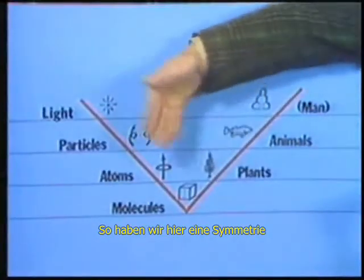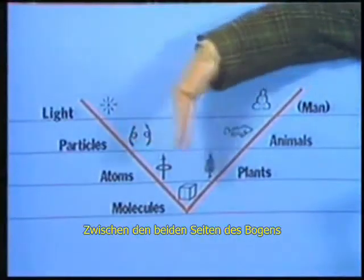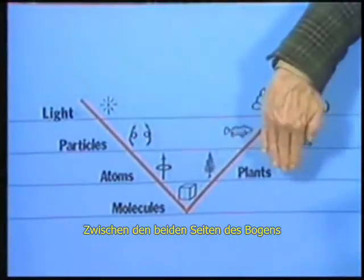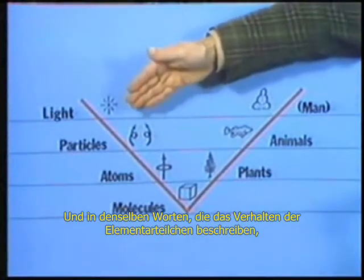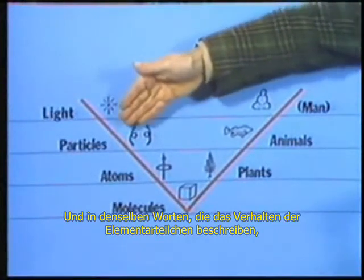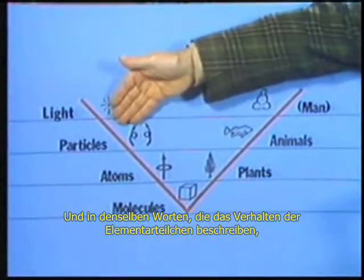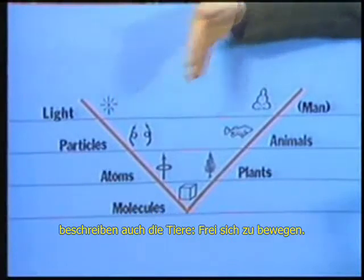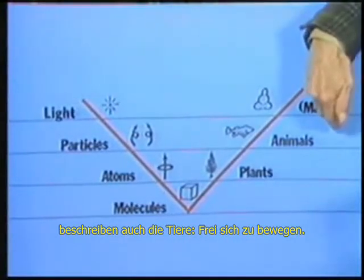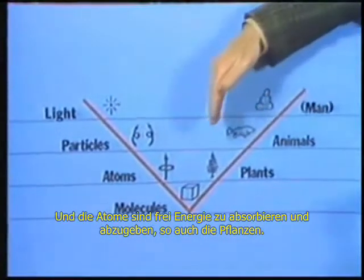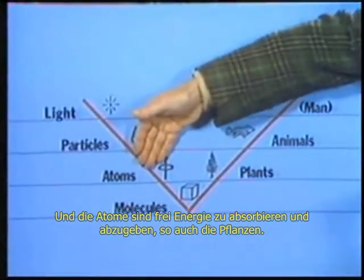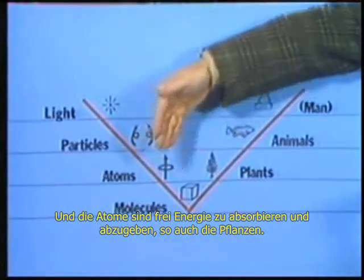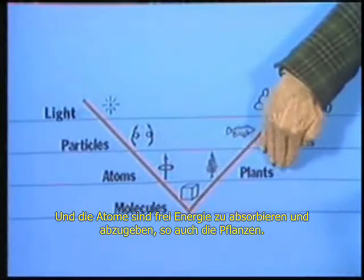We've got a symmetry between the two sides of this arc, in that the same words that describe the behavior of the particles describe the animals — that is, they're free to move. And the atoms are free to absorb or release energy, and so are the plants.